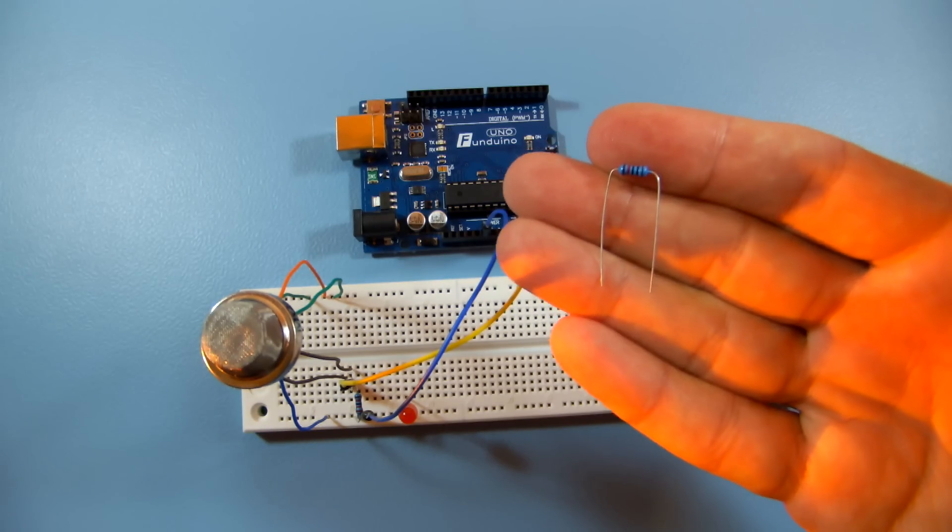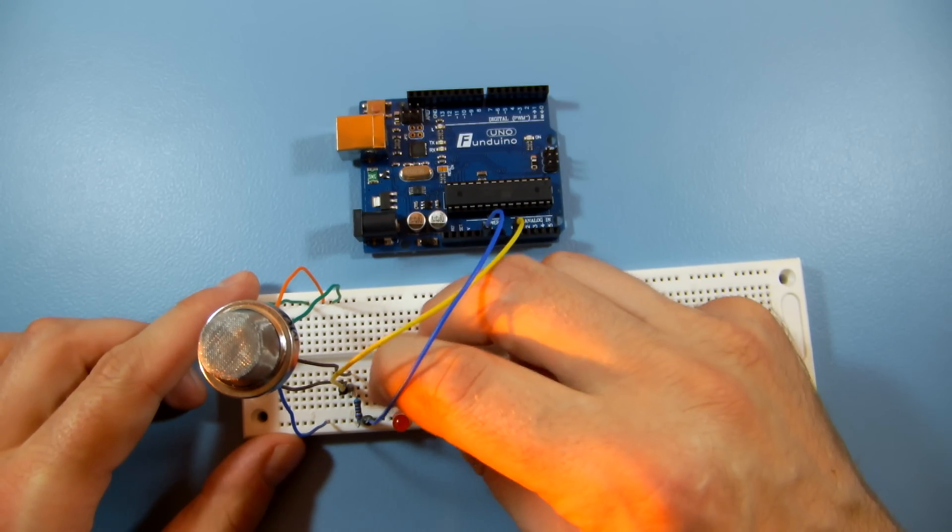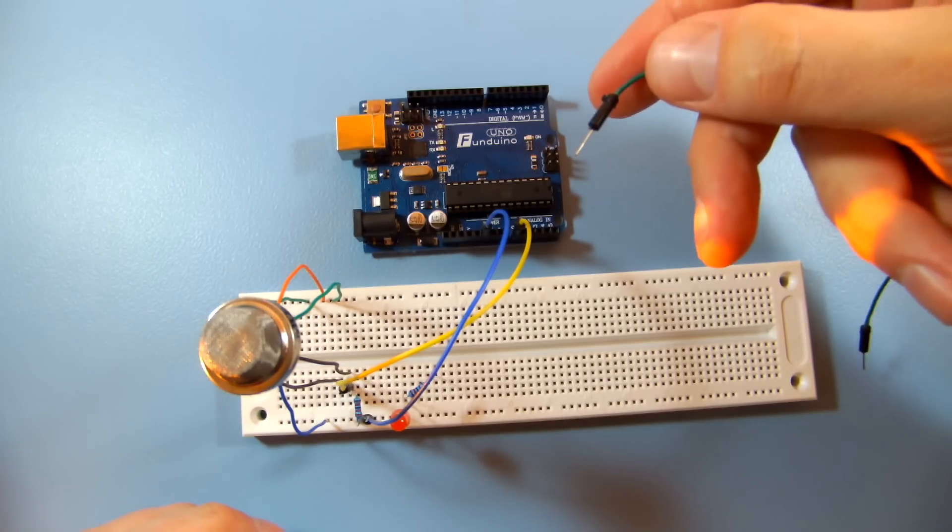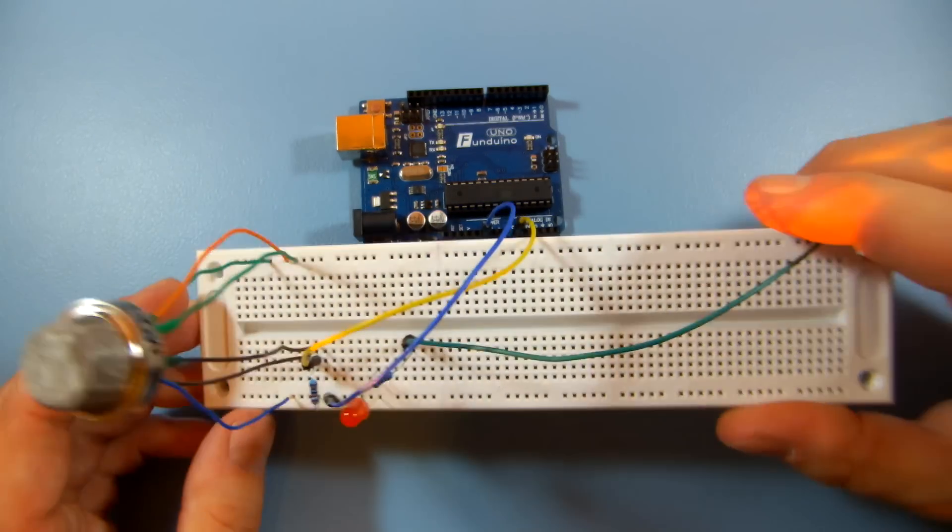Connect a 120 ohm resistor to the positive lead of your LED. On the other end of the resistor, throw a jumper wire to your Arduino's pin number 8.